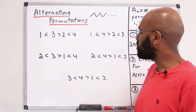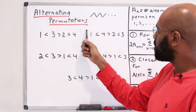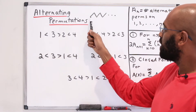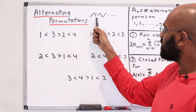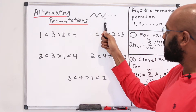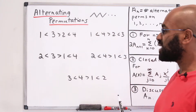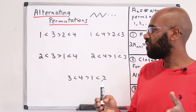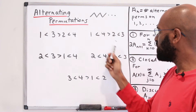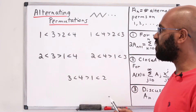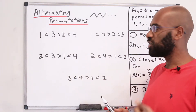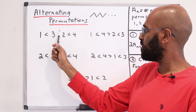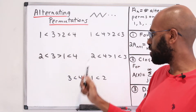An alternating permutation is a permutation of the set 1 through n that goes up and down, then up, then down, then up, etc. For example, for the numbers 1 through 4, this is a list of the 5 alternating permutations. Like this one: we have 1, then 3, then 2, then 4.